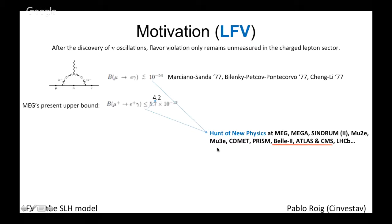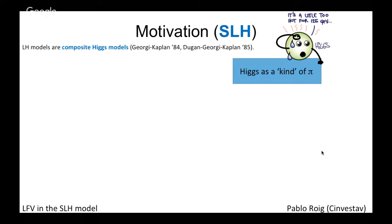The hunt for new physics in lepton flavor violation is a global effort across collaborations and decay channels. In addition to μ→eγ, there is μ→3e (an electron–positron pair), μ-to-electron conversion in nuclei, and even heavy meson decays at LHCb. Here I'll mostly be concerned with semi-leptonic lepton flavor violating tau decays, expected to be within reach at Belle II, and also Higgs lepton flavor violating decays being searched for by ATLAS and CMS.